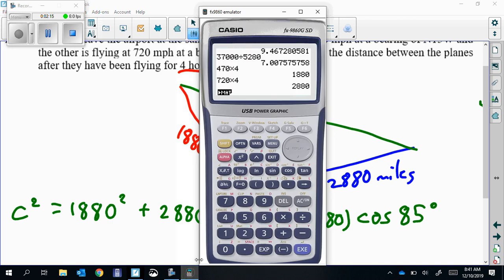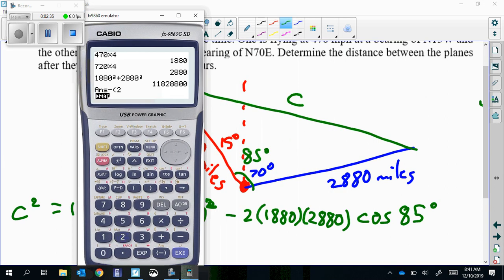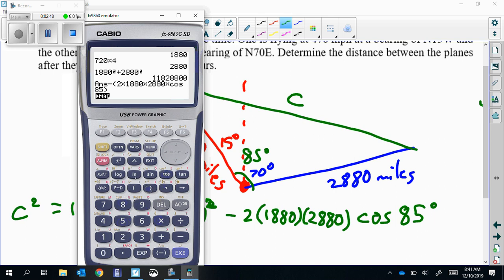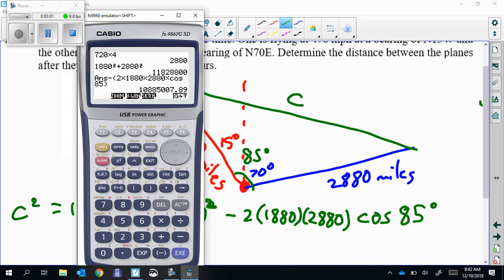Calculator work. 1880 squared plus 2880 squared minus, let me do some parentheses here. 2 times 1880 times 2880 times cosine 85 degrees. Let me make sure I'm in degrees before I hit enter. Good. And then that's C squared. So the square root of that answer.